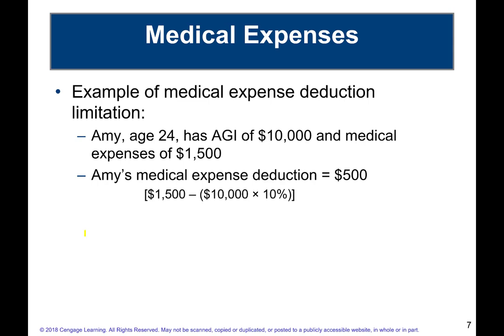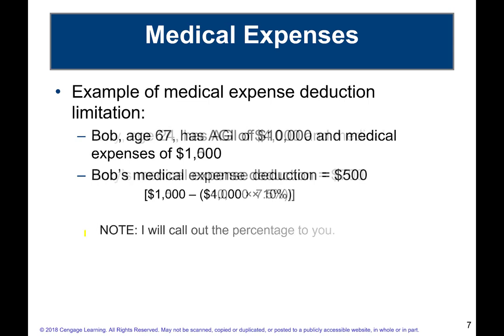Example: Amy, age 24, has AGI of $10,000 and medical expenses of $1,500. She can deduct $500 because that's the excess over the 10% threshold. Bob, age 67, has AGI of $4,000 and medical expenses of $1,000. He can take amounts in excess of 7.5% because he's 65 or older. I'll call out whatever percentage to use.